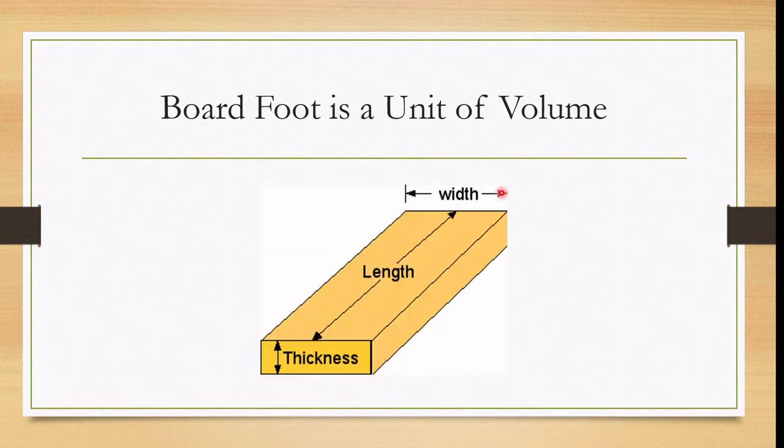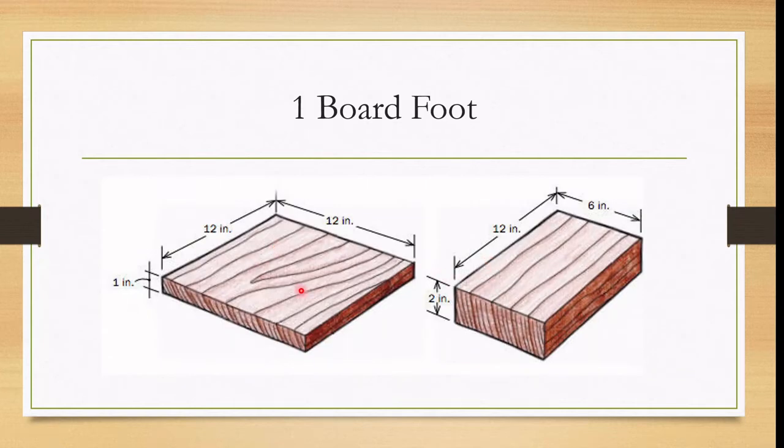And so since we're talking about volume, volume would include thickness of the piece of wood. It would include and account for the length of the piece of wood. And it would also include or account for the width of the piece of wood. So if we were to take a look at these two different pieces of wood, although they are very clearly different sizes, and they actually have a very different surface area, they actually have the same volume.